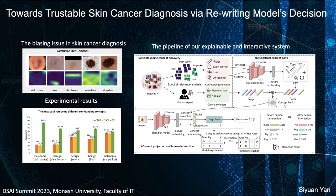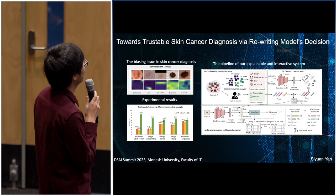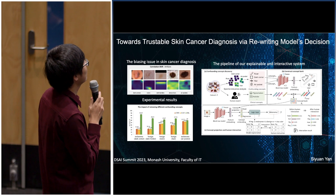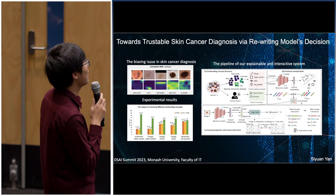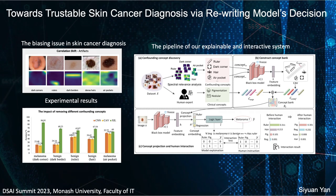Hello everyone, I'm a first-year PhD student from Monash Medical AI Group. Today I'm happy to introduce our recent work towards trustable skin cancer diagnosis by explaining a model's decisions. We aim to address the confounding issue in skin cancer diagnosis caused by dermoscopic artifacts. To achieve this, we propose an explainable and interactive system consisting of three steps.